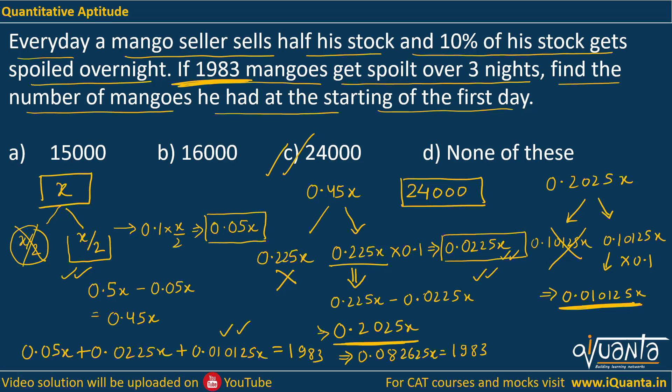The critical point of this question was that many were getting confused over the 10% of stock getting spoiled. First the seller has his mangoes, he sells 50% of it and the rest remains with him. Now the rest that is remaining with him — its 10% will be spoiled. That is how we calculated the spoilage each day, found the remaining stock, and followed the same process each night. I hope that is clear. If there is any doubt, please ask again. Thank you.